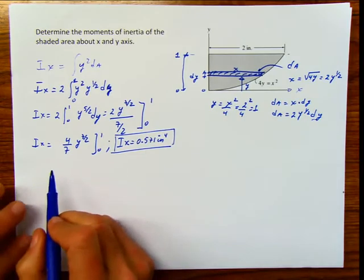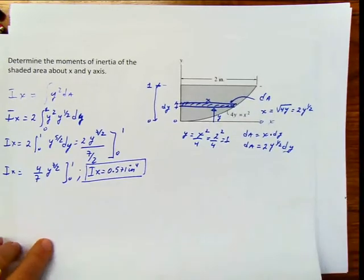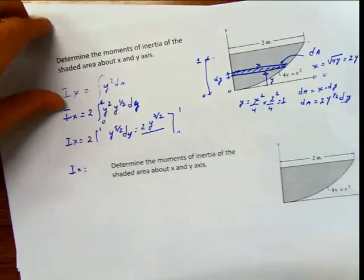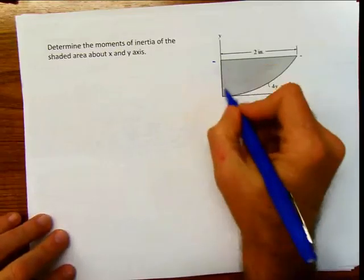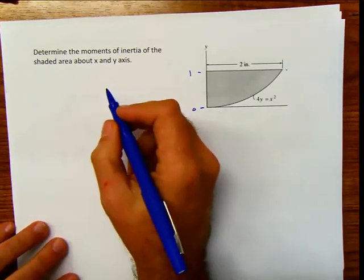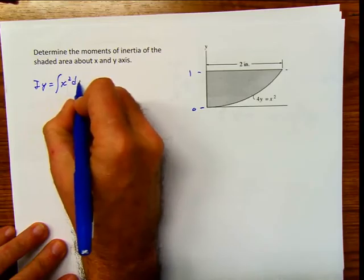Now we have to do the other part — the moment of inertia with respect to the y-axis. We already calculated that this boundary is 0 and this is 1. I sub y is going to be the integral of x squared dA.